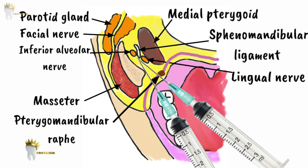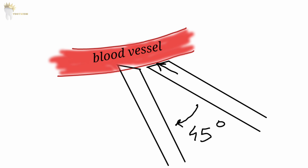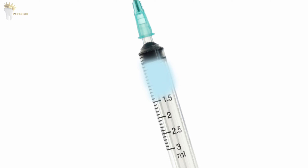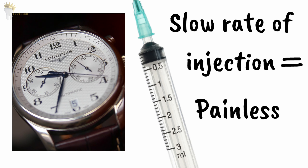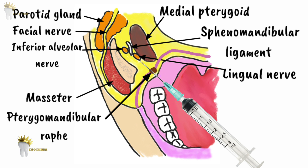Aspiration in two planes rules out false negative aspiration — if the bevel is just touching a blood vessel, it could give a false negative. This ensures no blood vessel has been penetrated. After negative aspiration, 1.5 ml of solution is deposited very slowly, taking at least one minute; slow injection is what makes it painless. The needle is then withdrawn halfway, aspiration in two planes is repeated, and if negative, the remaining 0.2 ml is injected to anesthetize the lingual nerve.